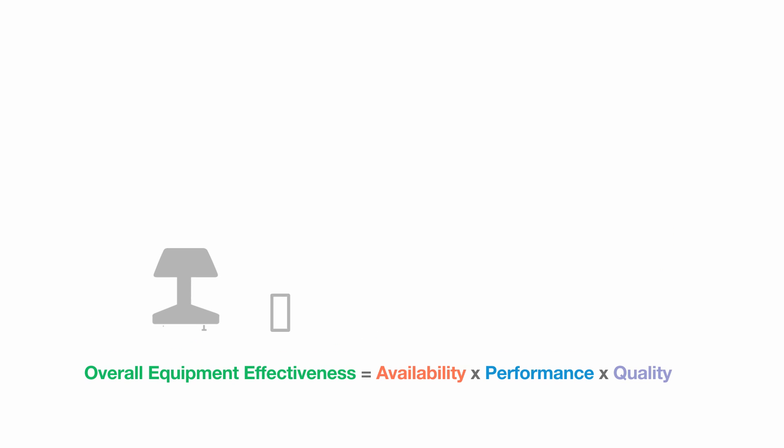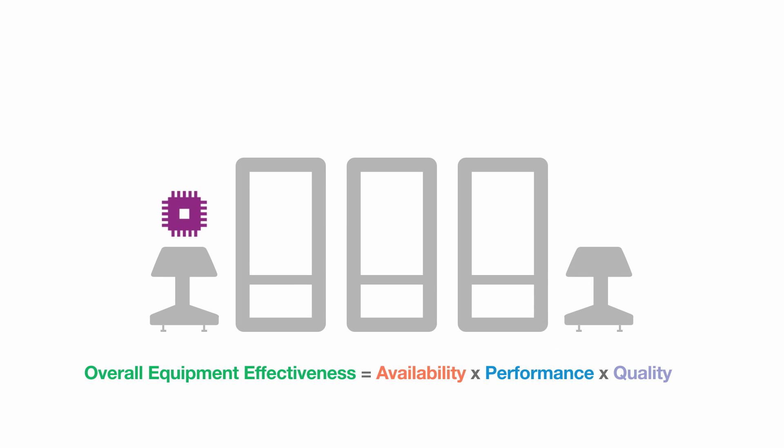To measure the efficiency of a line, production engineers use the overall equipment effectiveness formula that shows them how much right first time products the line produces compared to what it should have produced in the allocated time.